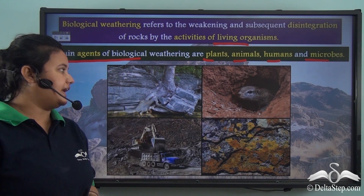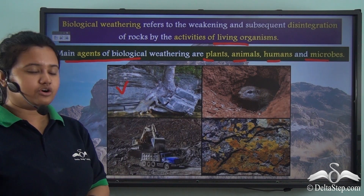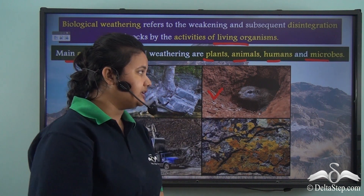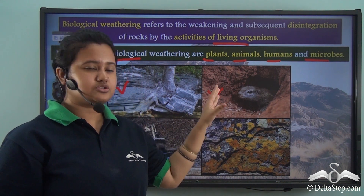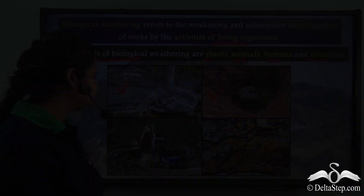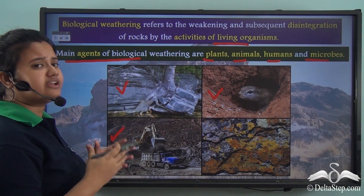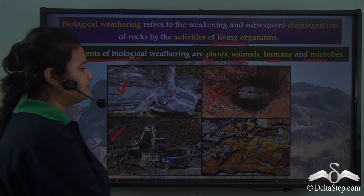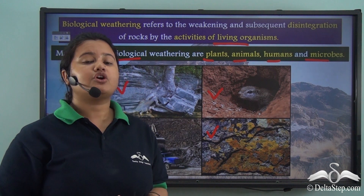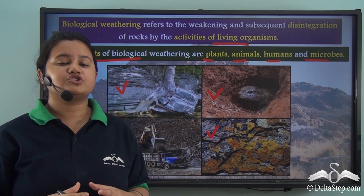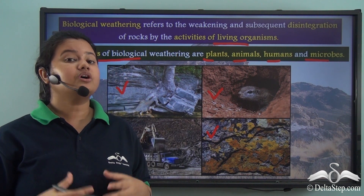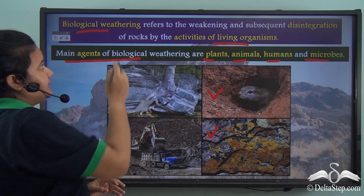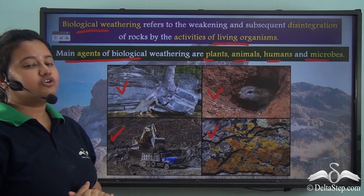When roots penetrate deeper into the rocks they cause the rocks to disintegrate. Burrowing animals like rodents dig burrows or holes in the ground, which also causes the rocks to break down. Human activities like mining, quarrying, farming, and deforestation loosen the earth's surface and cause the rocks to break down. Finally, microbes germinate on rocks and release certain acids which make the rocks weaker and cause them to disintegrate. All these living organisms are therefore known as agents of biological weathering.